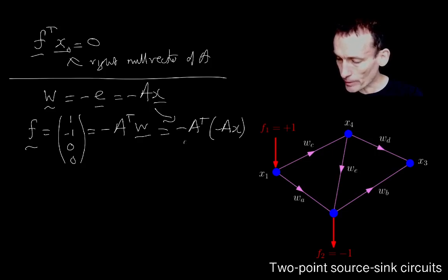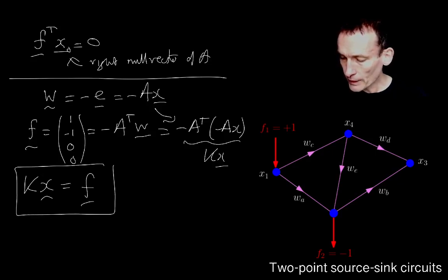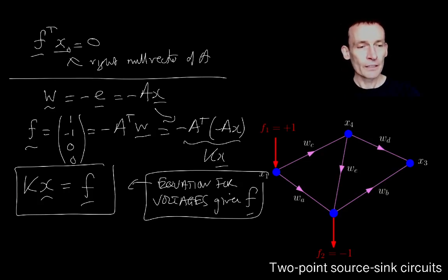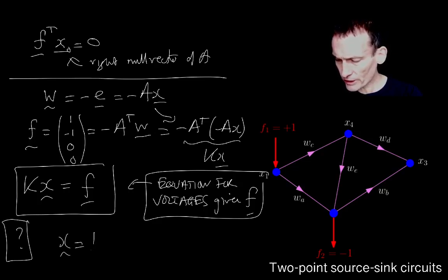So what we conclude then is that, remember, this is just KX, where K was the Laplacian matrix I introduced in a previous lecture. So now look, this is the equation for the voltages at each of the nodes given F. So we know the Laplacian K, we know F, so here's a nice matrix equation for X. So here's a question for you. Isn't the solution, therefore, just K inverse F?